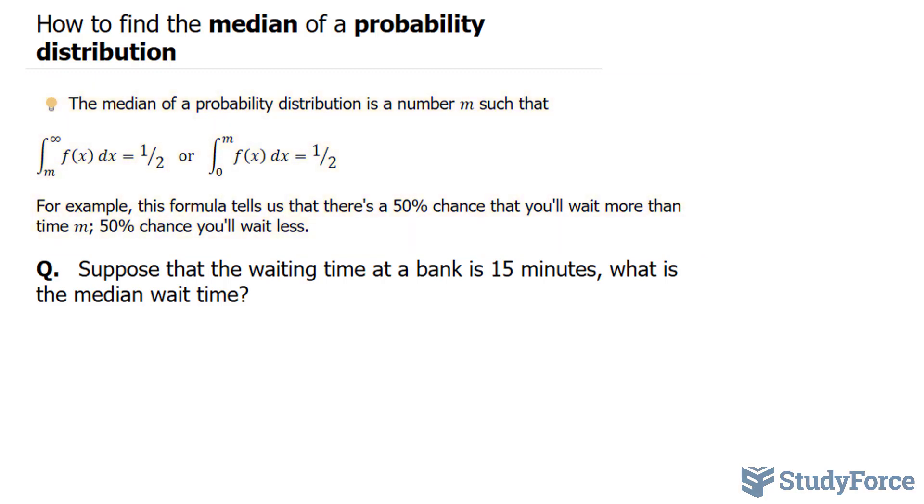For example, this formula tells us that there is a 50% chance that you will wait more than time m, and a 50% chance you'll wait less.